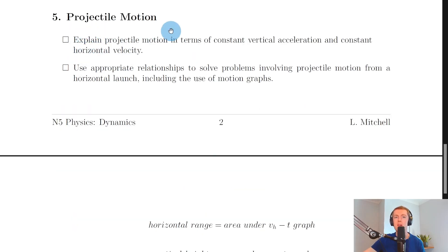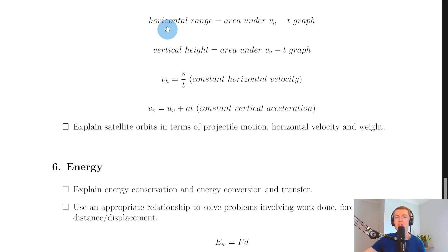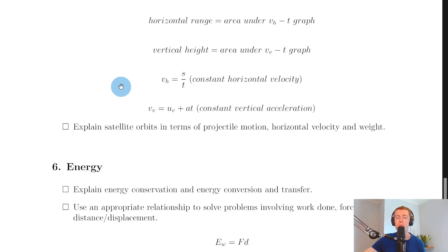Moving on to section five — projectile motion. You need to explain projectile motion in terms of constant vertical acceleration and constant horizontal velocity. These two key phrases explain the curved path of a projectile. You can find the horizontal range by finding the area under the horizontal velocity against time graph, and the vertical distance by finding the area under the vertical velocity against time graph. For horizontal motion calculations use the speed-distance-time equation, or for horizontal velocity vectors use vH = s / t.